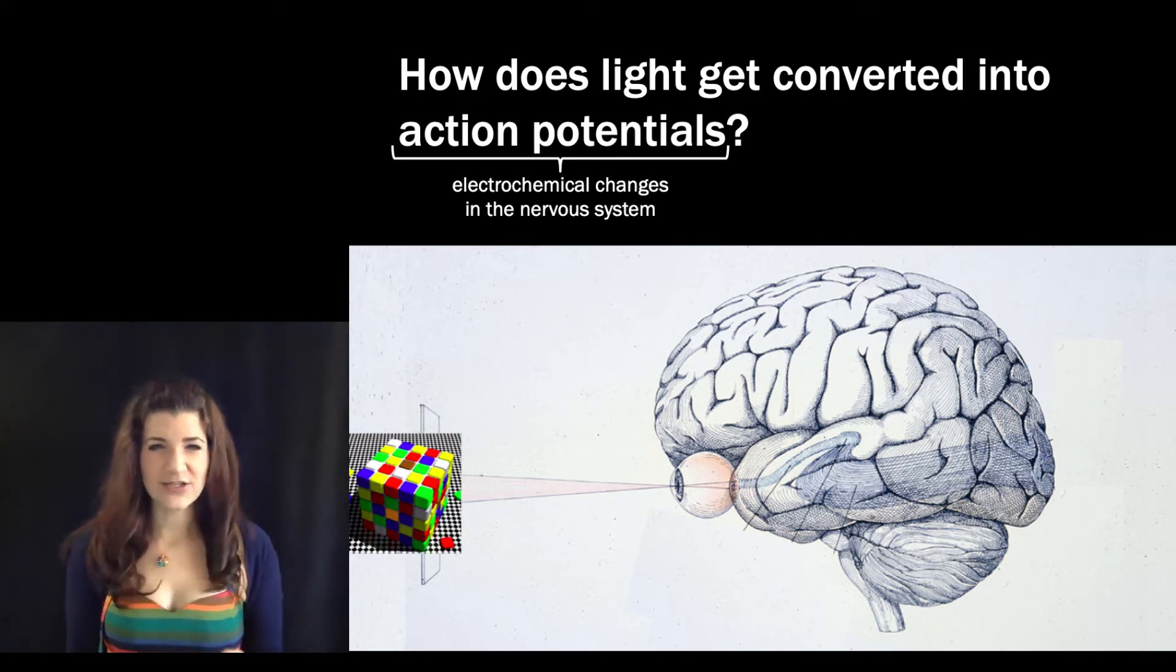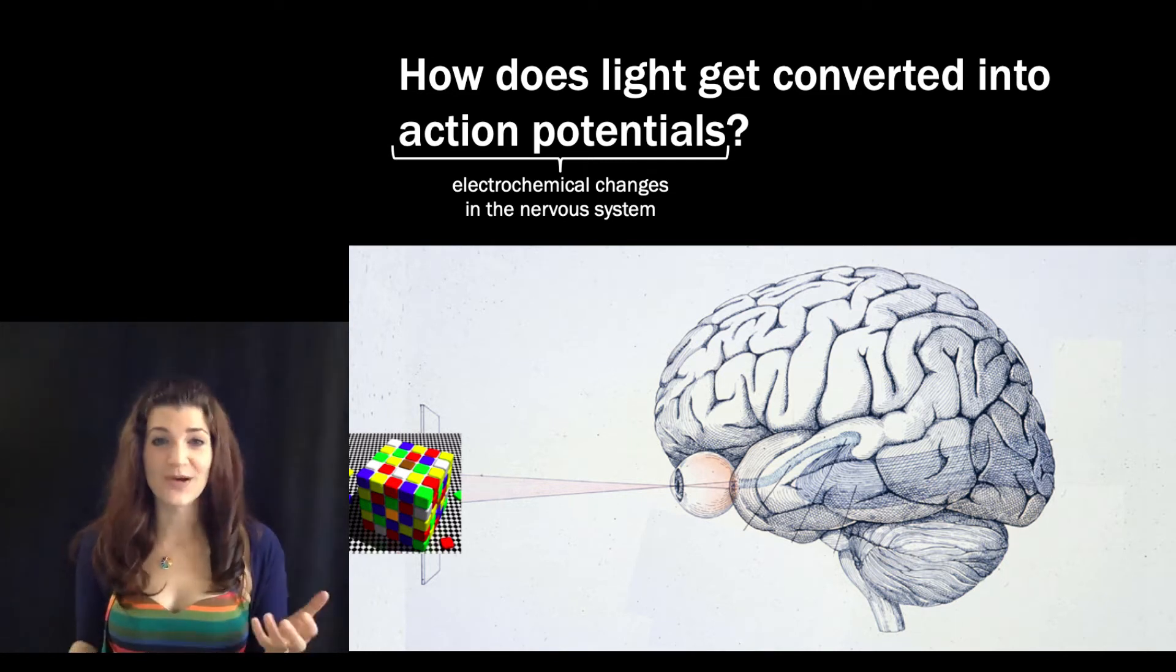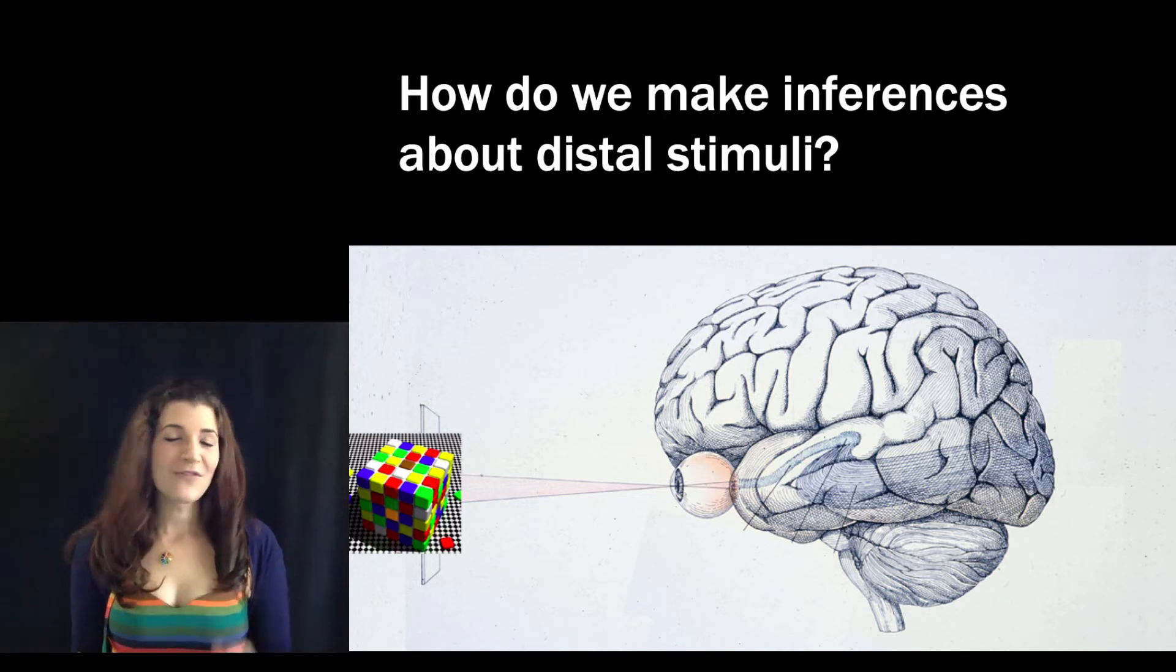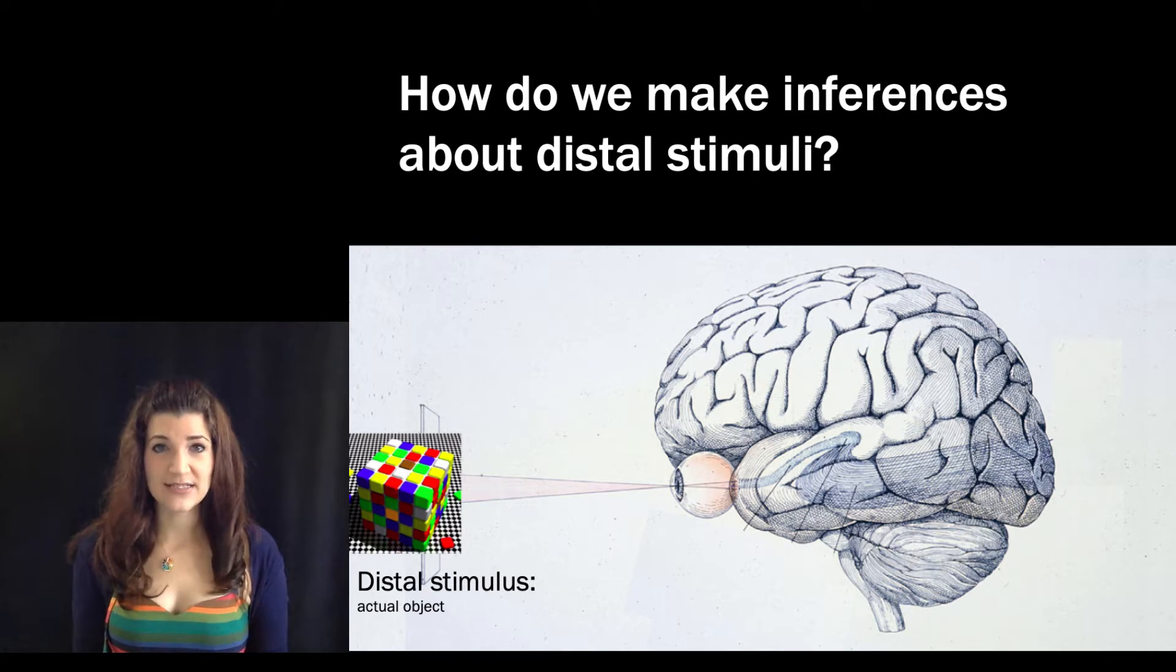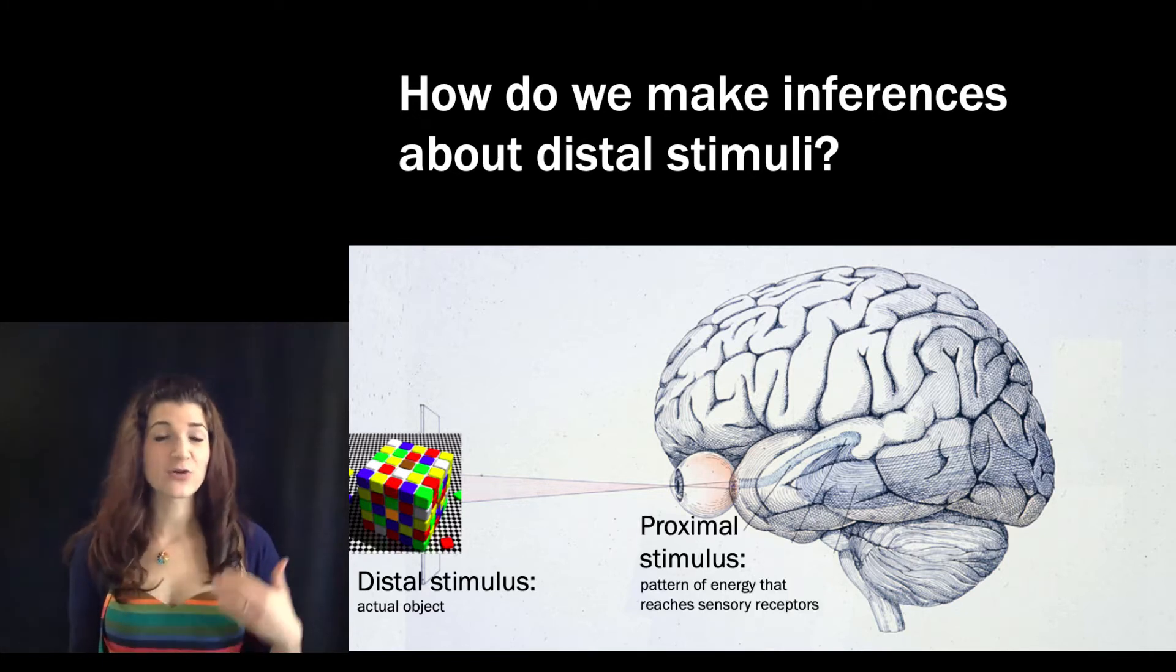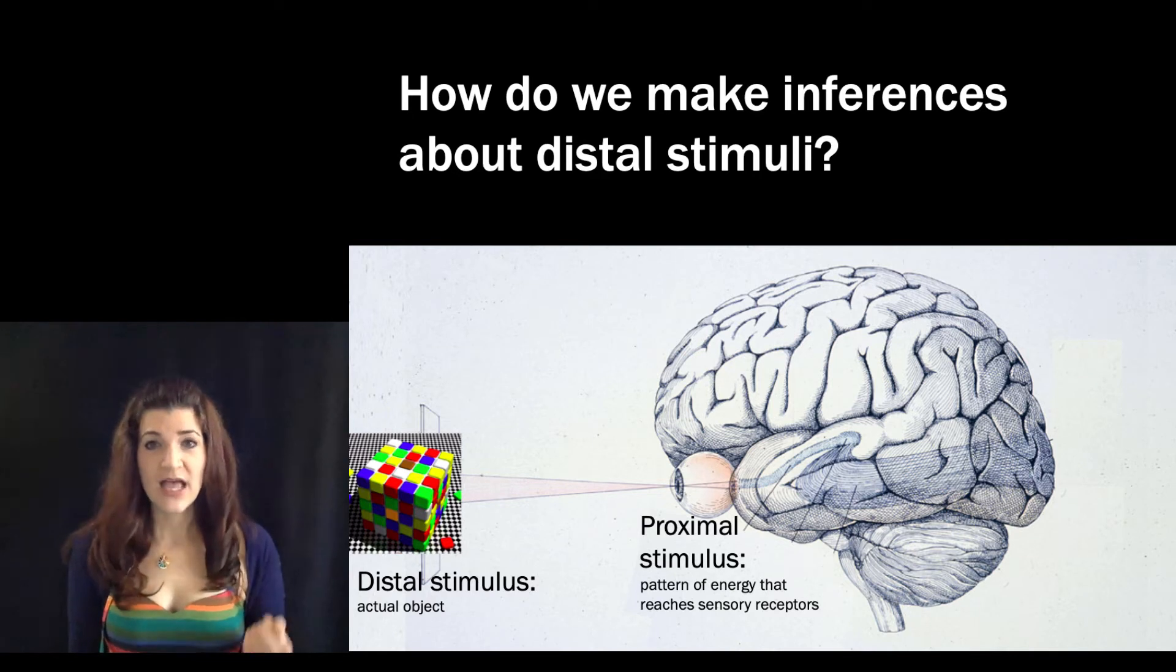But we're not just interested in translating information about light into the code of the brain. We're also interested in how we interpret that code. One of the fascinating things about our sensory systems is that when we go from a physical object out in space, that is what we call a distal stimulus, to a proximal stimulus, which is the energy that actually reaches our sensory receptors, we lose a ton of information.